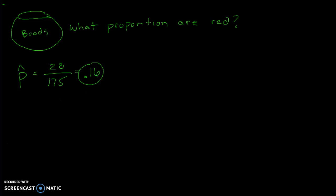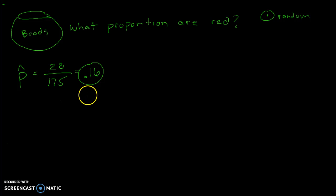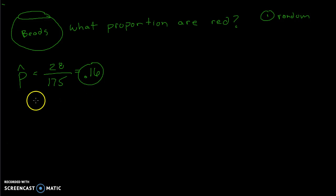That by no means tells us that the exact proportion of red is 0.16, because this number may vary. First off, this sample better be random — you can't do it unless it's a random sample. You're going to have bias if it's not random. Next, if you put all those beads back, mixed up the jar, and grabbed another sample, you might get a different proportion. You might grab another 175 beads and not get 28 — you might get more or less. Samples are going to vary.